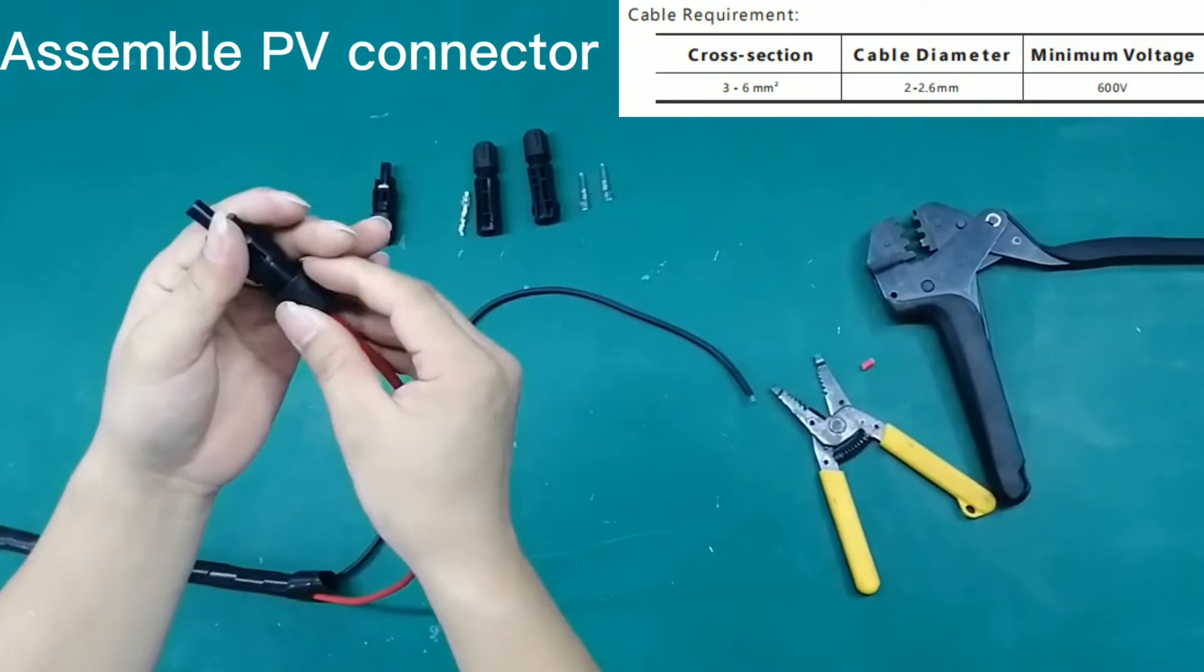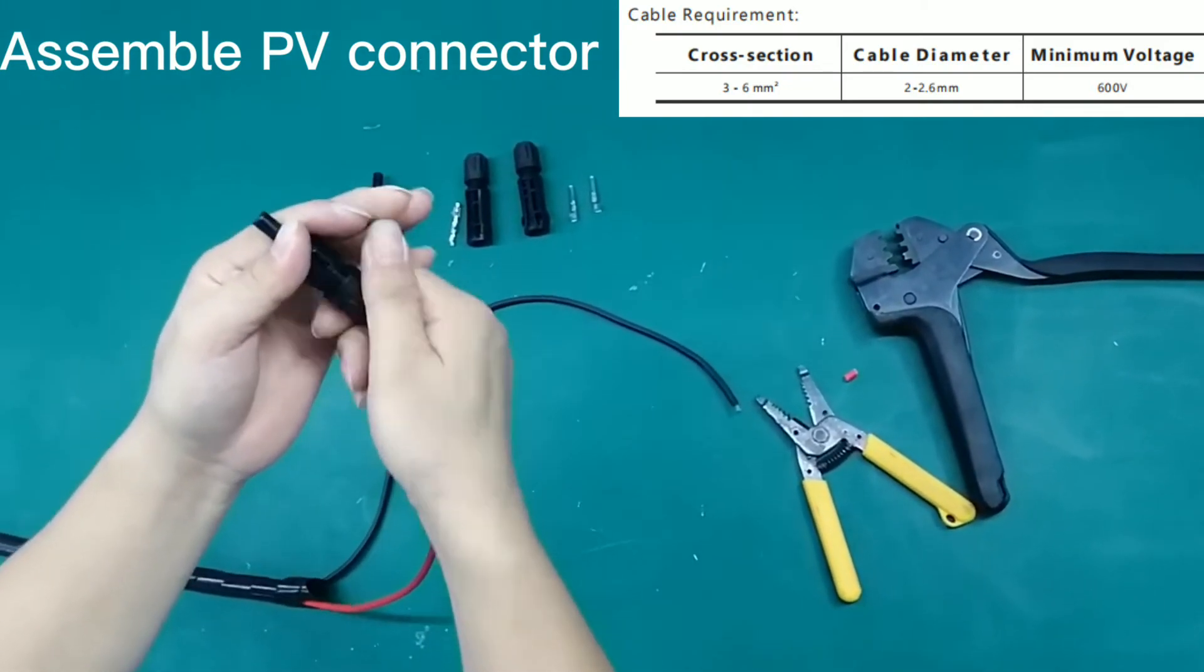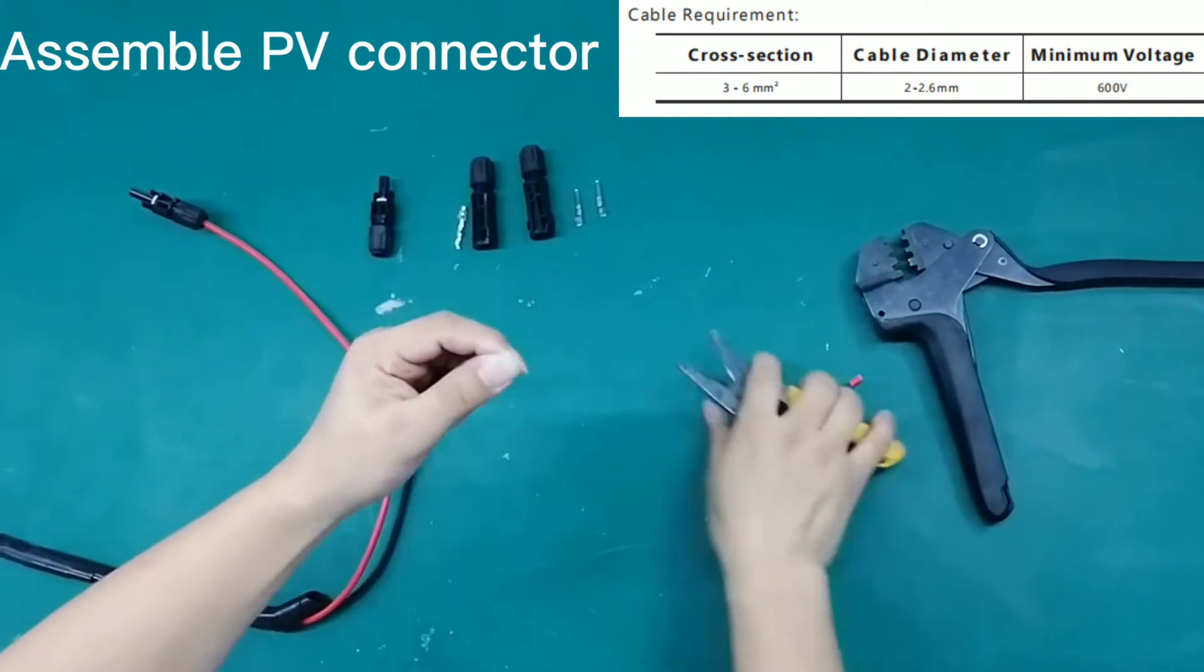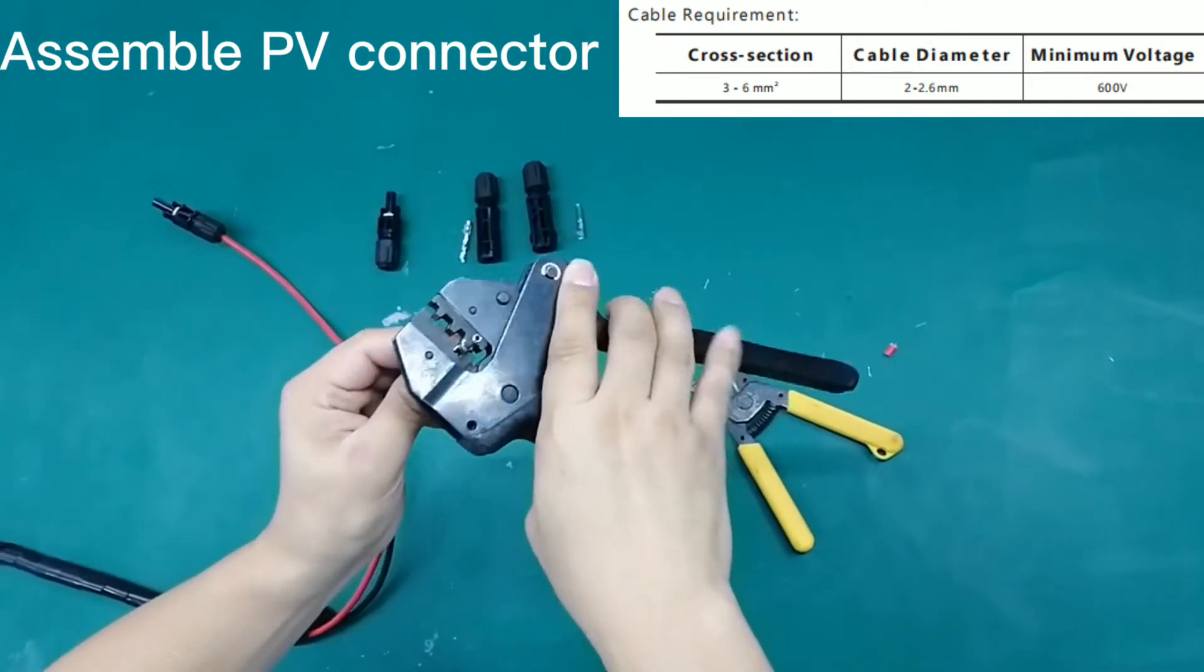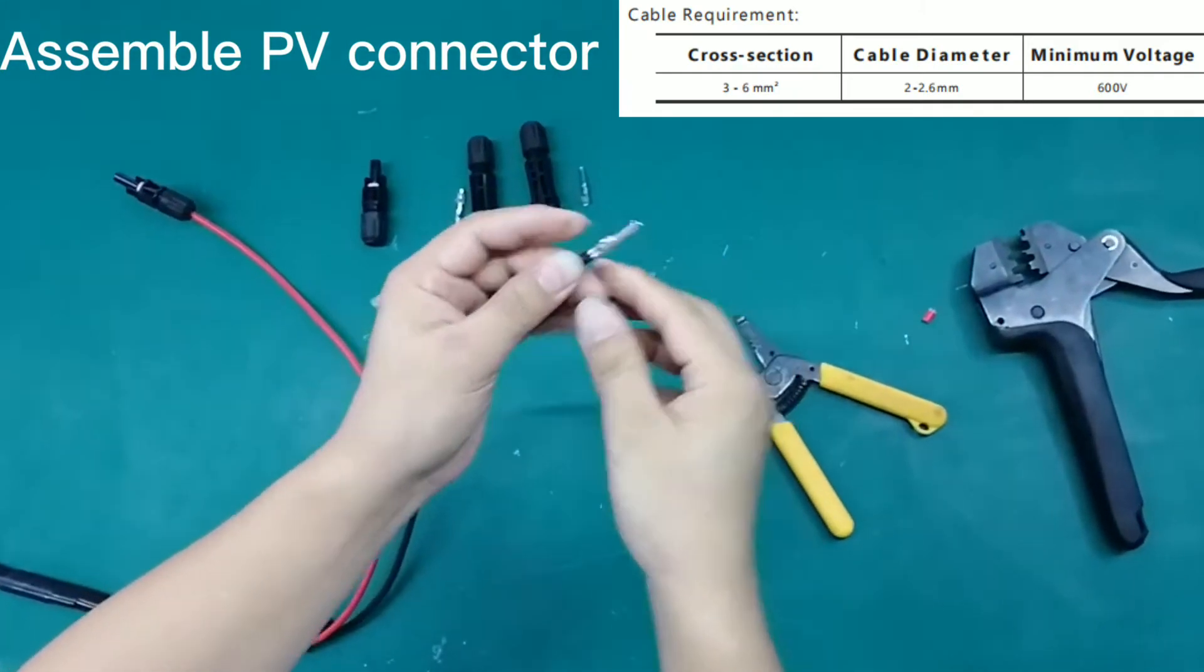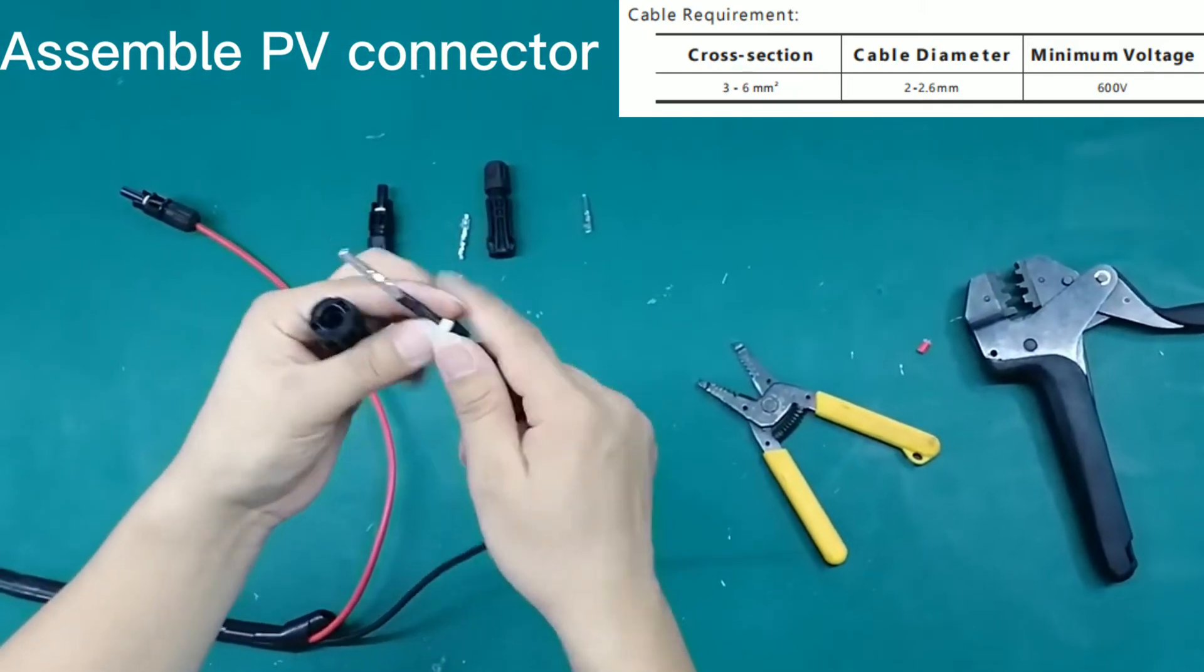Insert into the corresponding insulator until it snaps into place. Tighten the cable gland. When verified the PV connector is tight, align the two half connector and mate them together by hands until click is felt or heard.